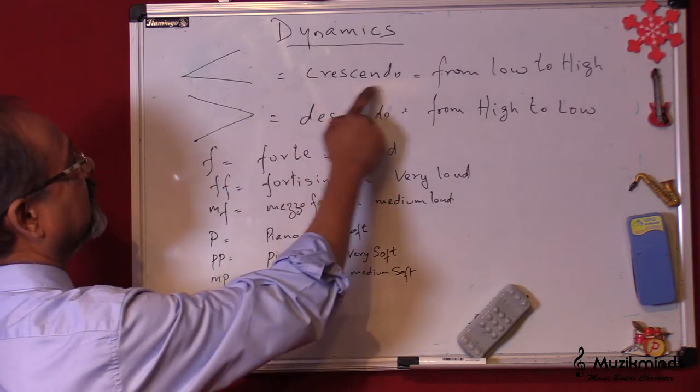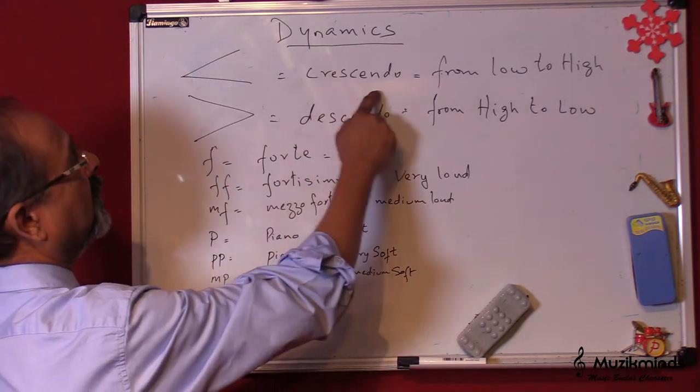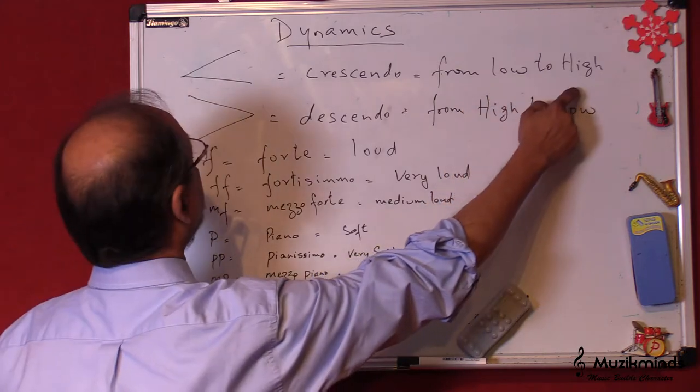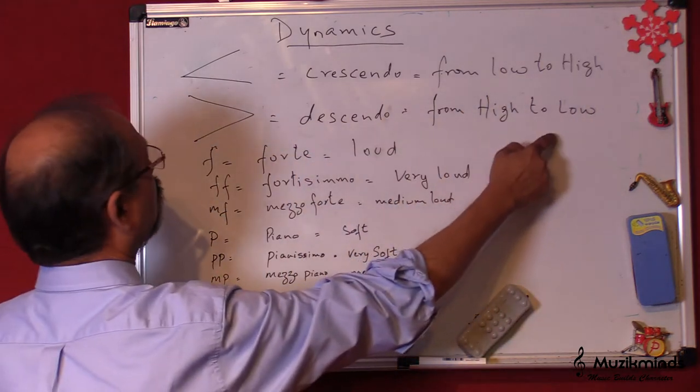We have the crescendo. This is the crescendo, which is from low to high. This is descendo from high to low.